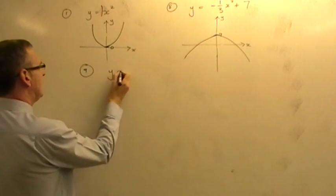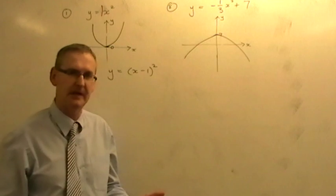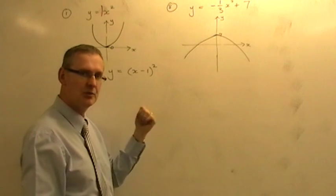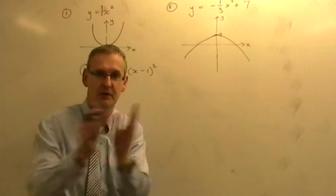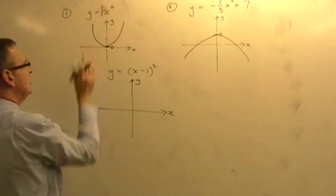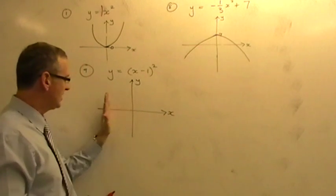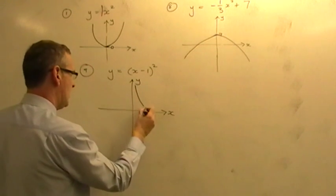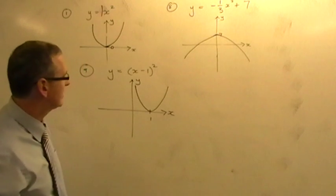Number nine: y equals x minus one, in a bracket, all squared. When you have something in a bracket all being squared, it takes the ordinary x squared graph and shifts things horizontally. The sketch is a u-shape, but you don't move it to minus one on the x-axis — you do the reverse and move it to positive one. You draw the same u-shape shifted one place to the right.